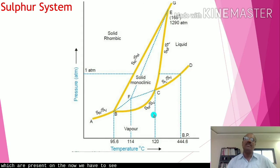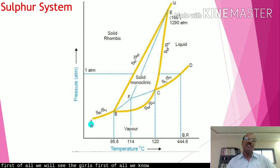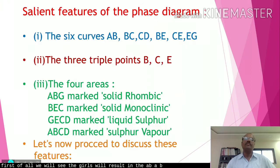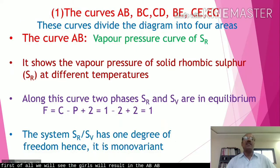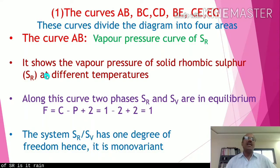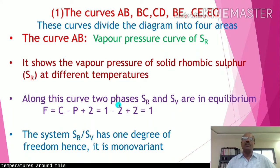Now we will see the salient features one by one, starting with the curves. Curve AB is called the vapor pressure curve of SR. It shows the vapor pressure of solid rhombic sulfur at different temperatures. Along this curve, two phases — SR and SV — are in equilibrium.